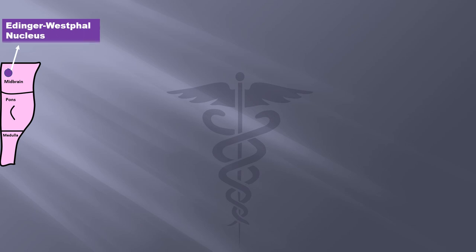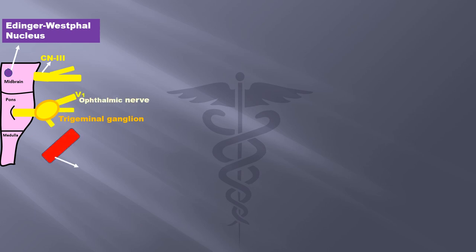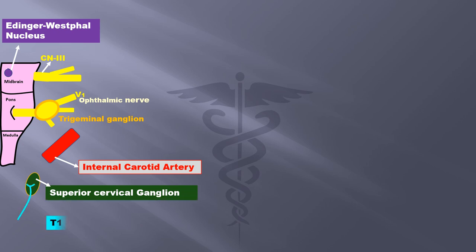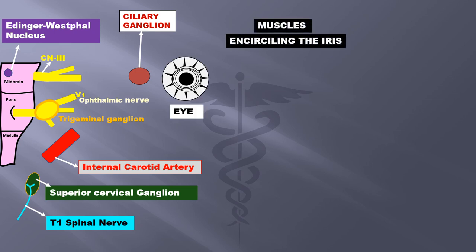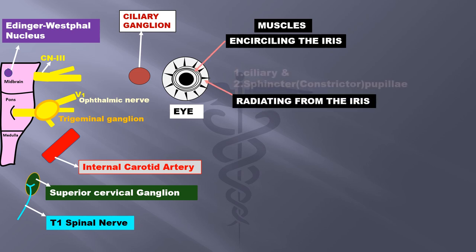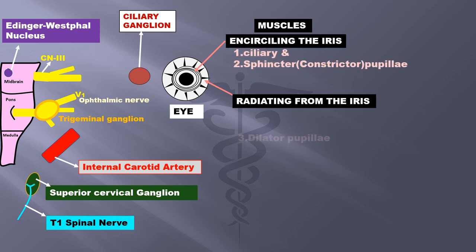At the top of the brain stem is the Edinger-Westphal nucleus, which is the nucleus of origin of the parasympathetic nerves — named after two different German scientists, Edinger and Westphal. Moving ahead, we have the oculomotor nerve, that is the third cranial nerve, with a different nucleus of origin. Just below it, arising from the pons, is the trigeminal nerve, the fifth cranial nerve, and its ganglion. You can also see the internal carotid artery, superior cervical ganglion, and the T1 spinal nerve entering this ganglion. In the eye, there are two groups of muscles: those encircling the iris — the ciliary and sphincter or constrictor pupillae muscles — and those radiating from the iris, the dilator pupillae muscles.